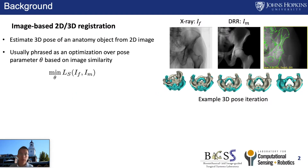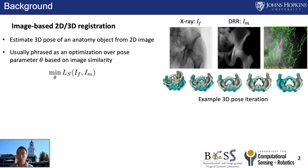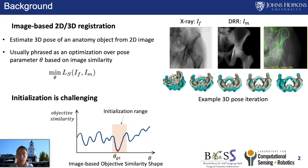Image-based 2D-3D registration is a method to estimate the 3D pose of an anatomy from a 2D image. It is usually phrased as an optimization over the pose parameters based on image similarity. However, the initialization of the registration is always challenging because the image-based objective similarity shape is highly non-convex.